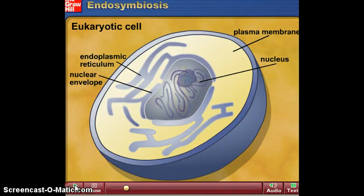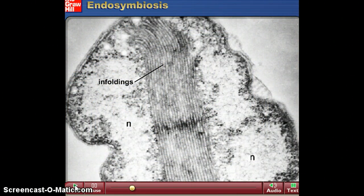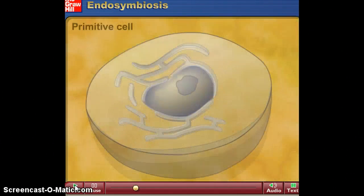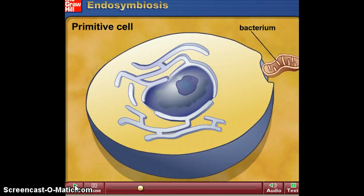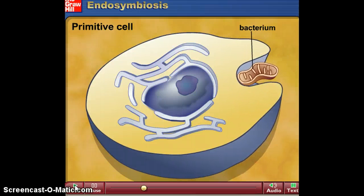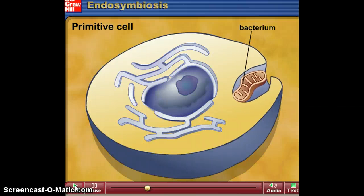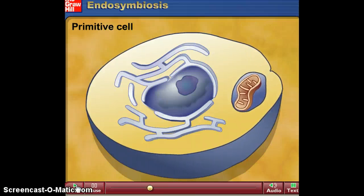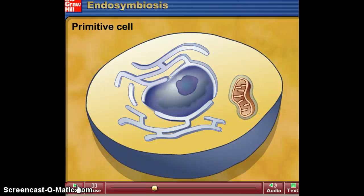The eukaryotic cell developed more organelles because it began to absorb simpler prokaryotic cells — infoldings of primitive cells. Eventually a bacterium gets swallowed up by the cell, and over time that bacterium becomes a membrane-bound organelle that we know as the mitochondria. This happens over millions of years.